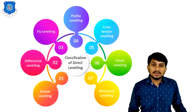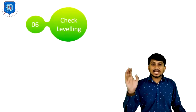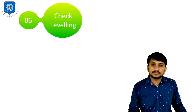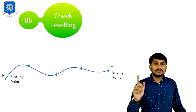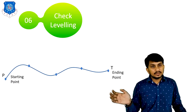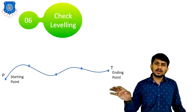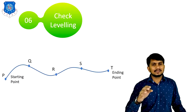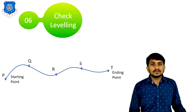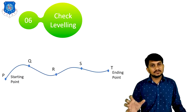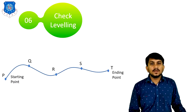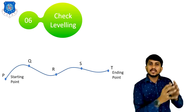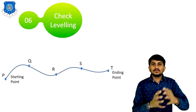The next type of leveling is check leveling. The name itself says it is used for checking the accuracy of the work. After completing the whole day's work, check leveling is started. Suppose there is a road where P is the starting point and T is the ending point. During the day's work, we calculated levels of a number of points like Q, R, S, etc. At the end of the day, we have to do check leveling by transferring the level from the ending point back to the starting point by means of differential leveling.